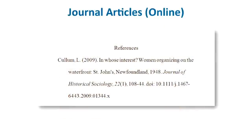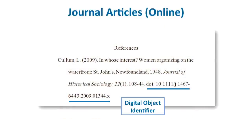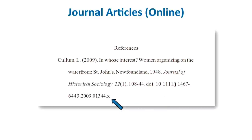You probably accessed most of the articles you're using online. For online journal articles, you add the DOI number, or Digital Object Identifier. You don't have to indicate what article index you used. Notice there's no period after the DOI number.